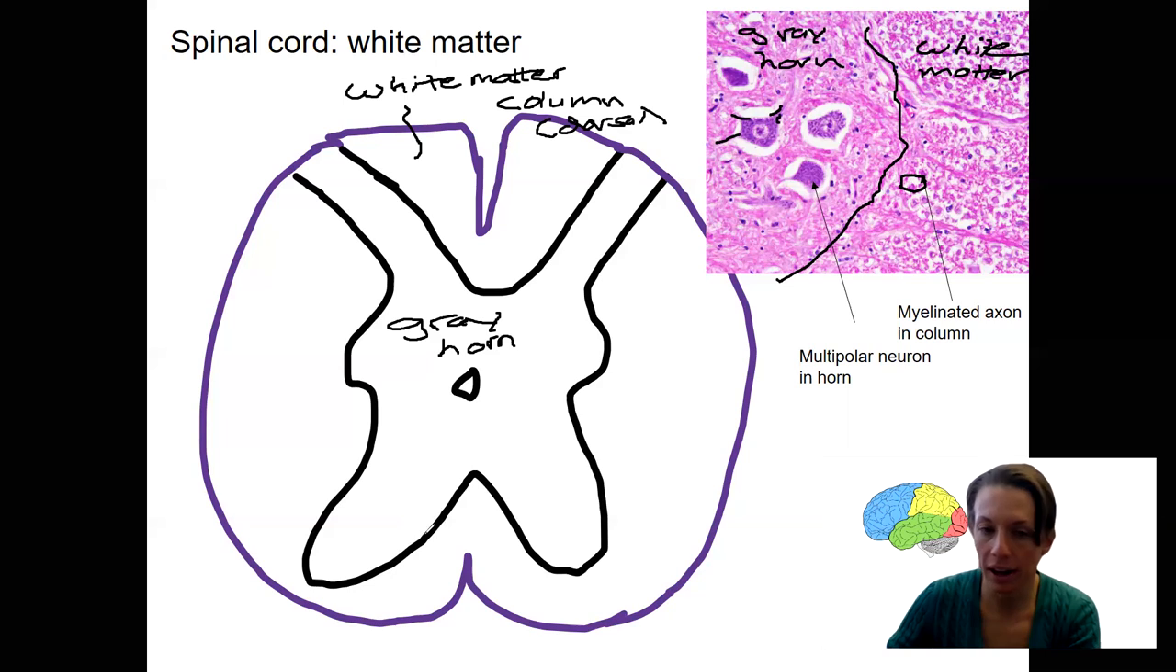Down here, we're going to have our ventral column. This is this region of white matter. It's just this entire region. Over here, we've got our lateral column.